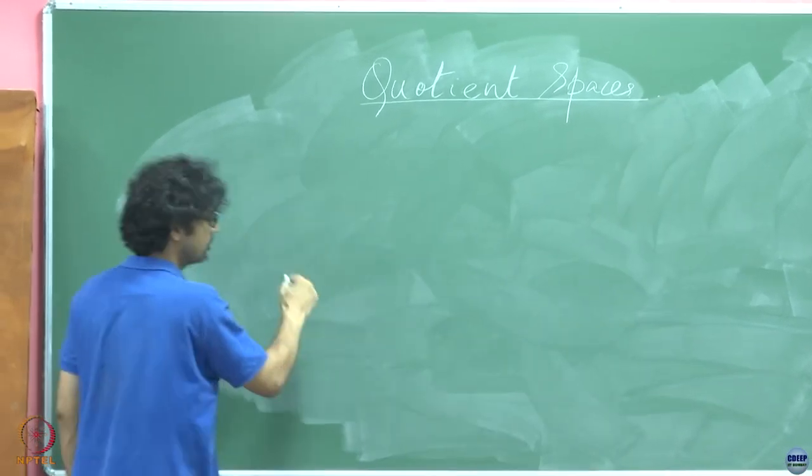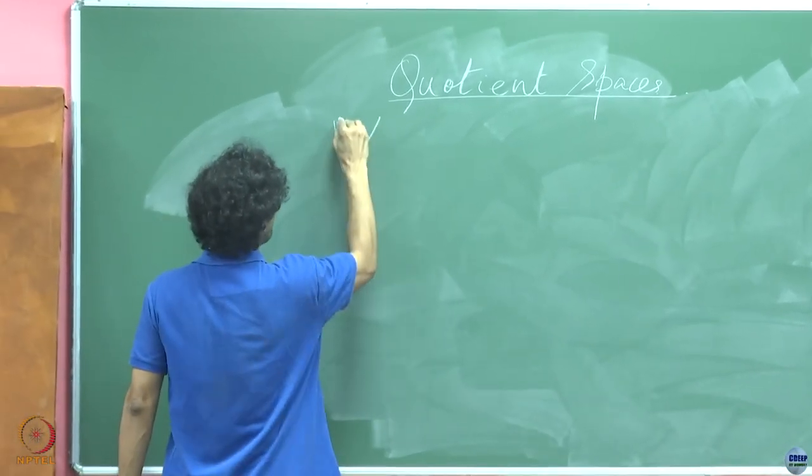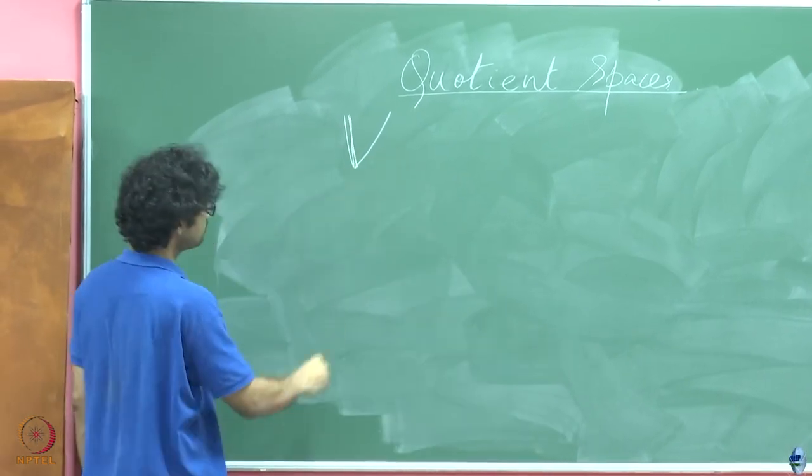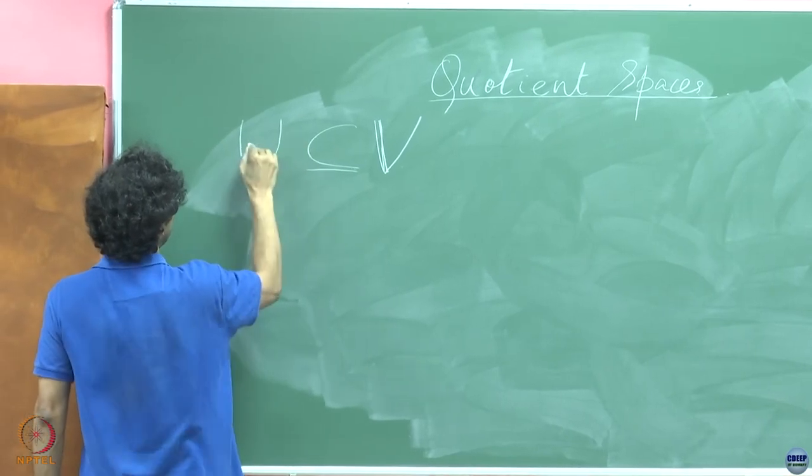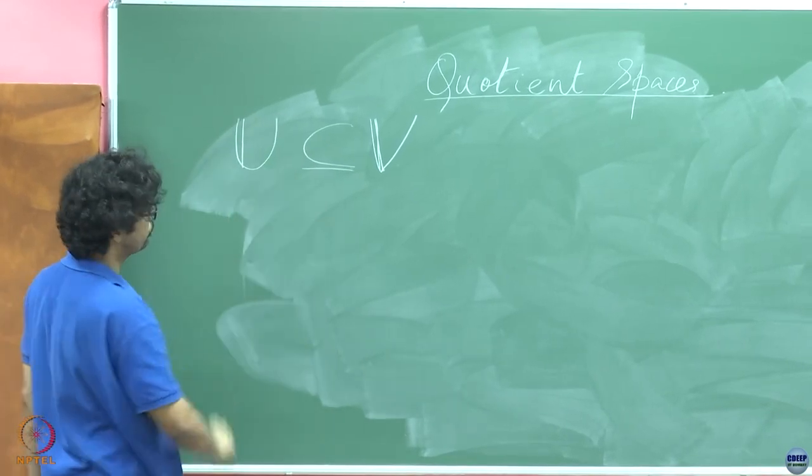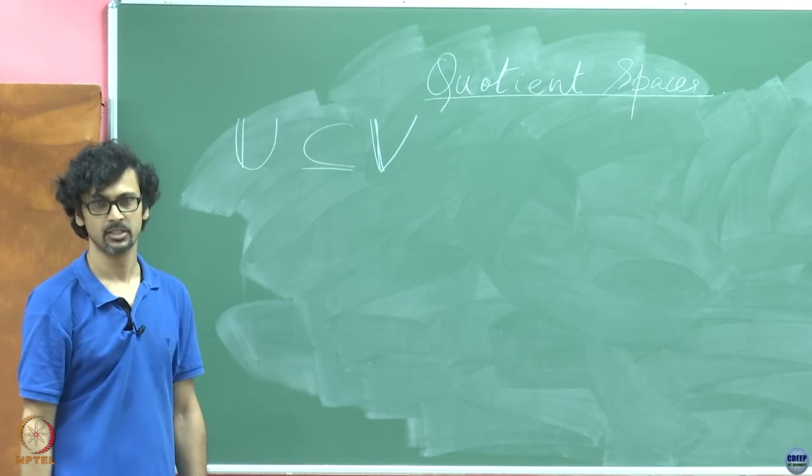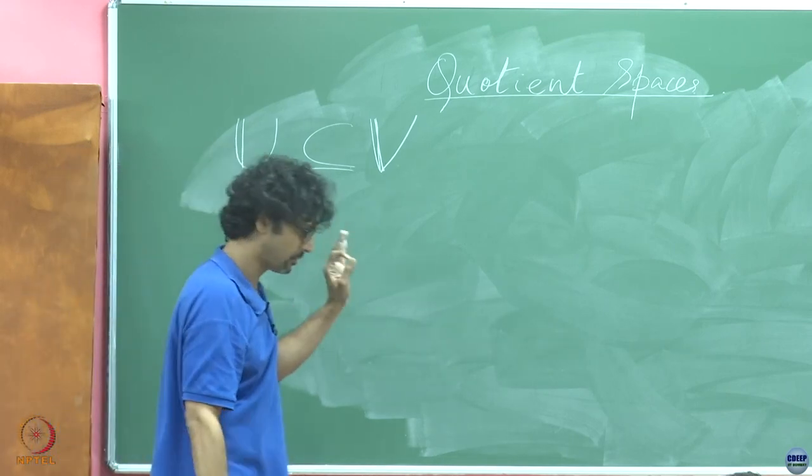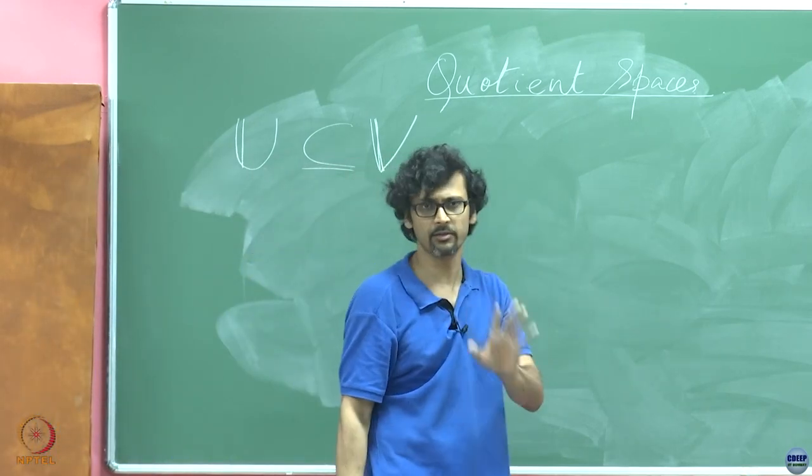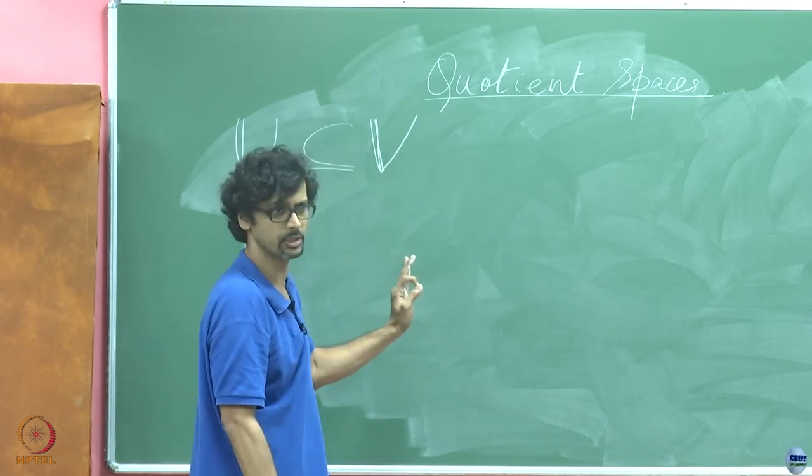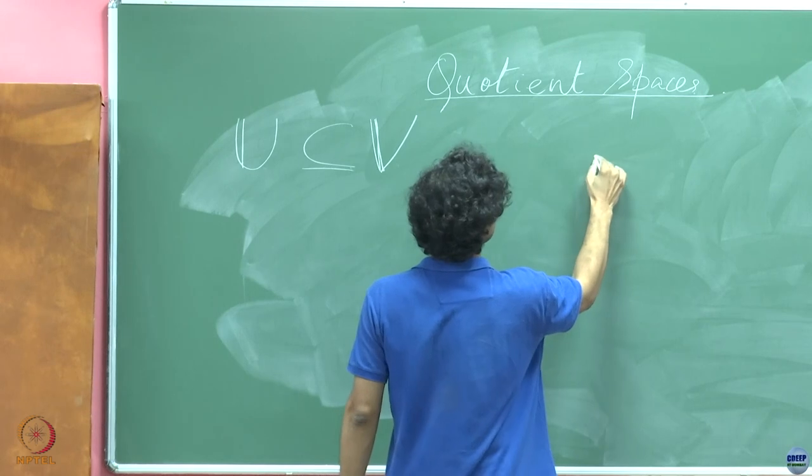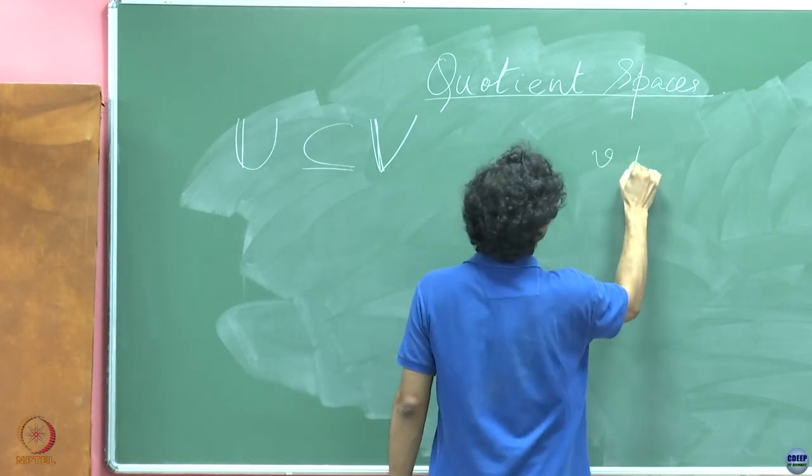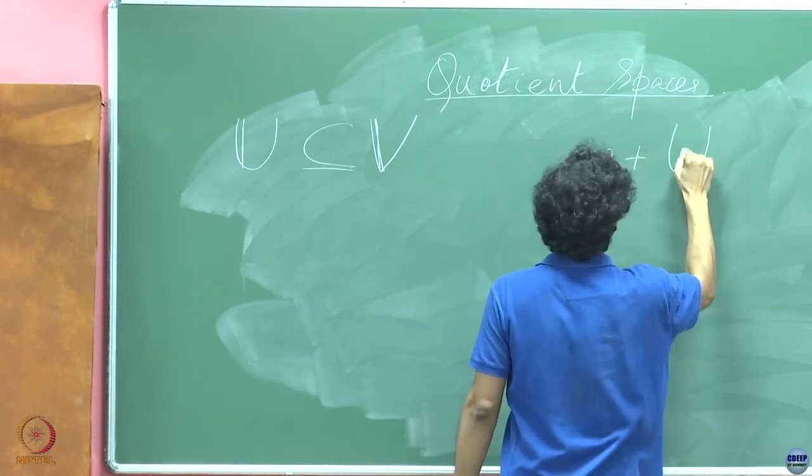As usual, we have a vector space V and we have a subspace of that vector space which is U. Just go by the definitions from the very first step onwards and ask me if you have any doubts. So the first thing I am going to define is this.